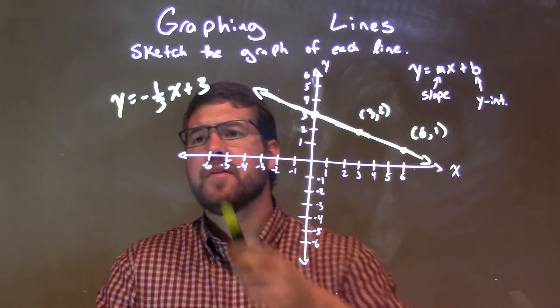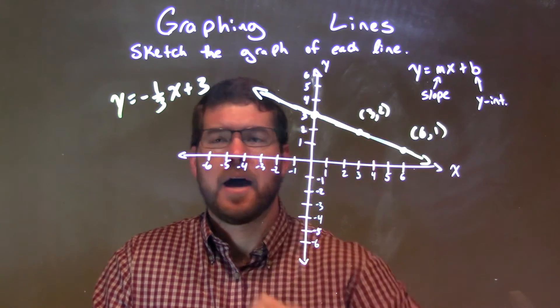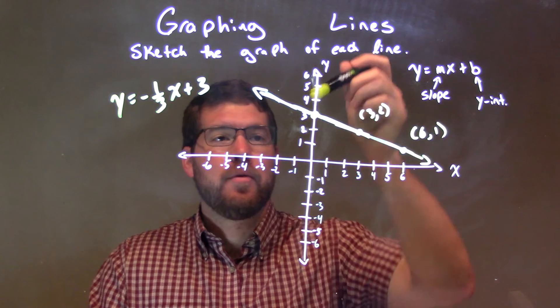So let's recap. We're given y equals negative one-third x plus three. Three is my y-intercept. Put a dot right there. Then we have a slope of negative one-third.